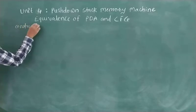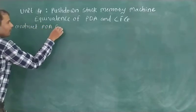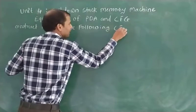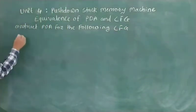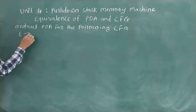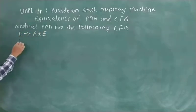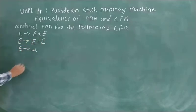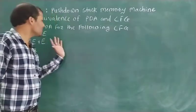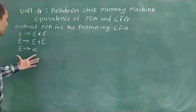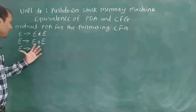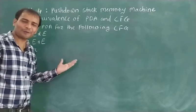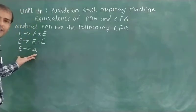You are given a grammar with production rules: E produces E star E, E produces E plus E, and E produces small a. You are given this context-free grammar and you need to construct the PDA for it. While constructing the PDA, the process is very simple.